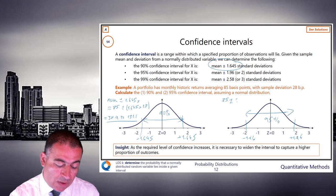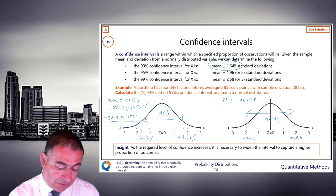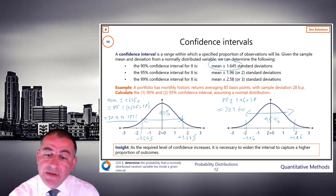85 plus or minus 1.96 times 28. So there's our range. And that comes to 30.1 at the bottom end, up to 139.9.